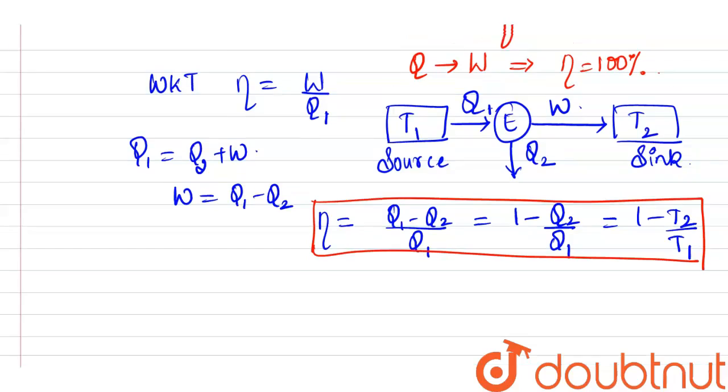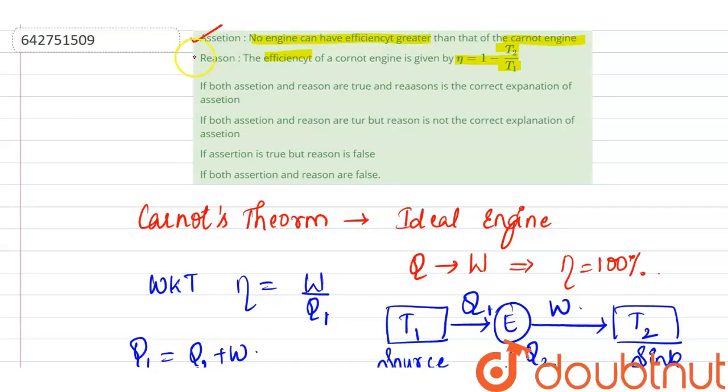So, if we are looking at the assertion and reason again, assertion is true individually, reason is true individually but reason is not explaining the assertion. So, our correct option is going to be option 2.